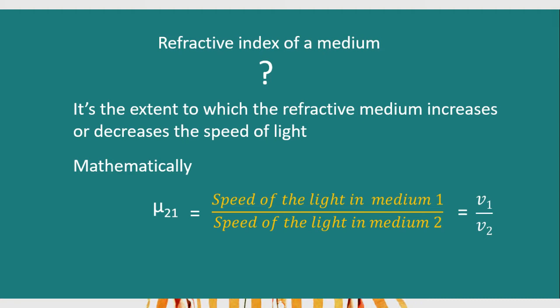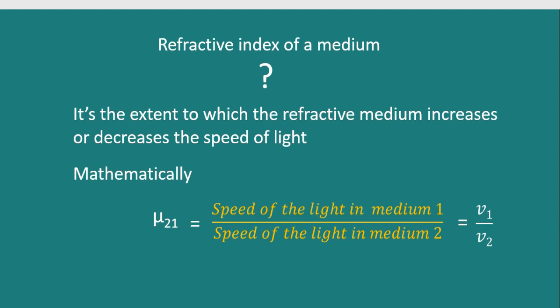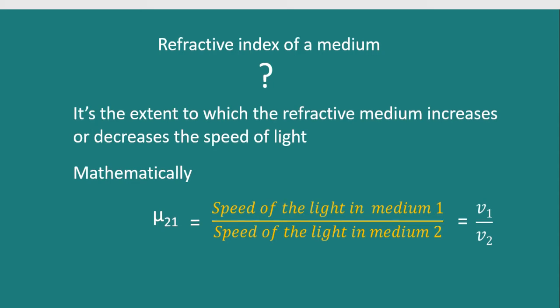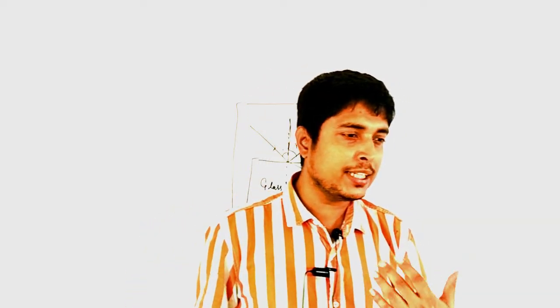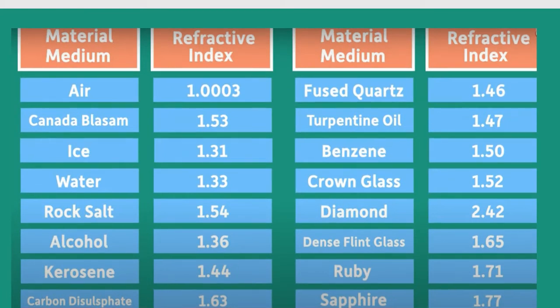V2 is less than V1, which means the refractive index of medium 2 — glass with respect to air — is greater than 1. Some example refractive index values: air is approximately 1, ice is 1.31, water is 1.33, and rock salt is 1.54. All denser media have a refractive index greater than that of air. The refractive index of water is 1.33.